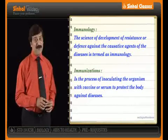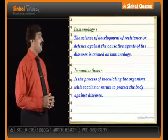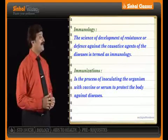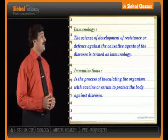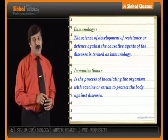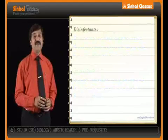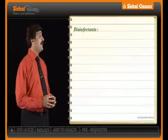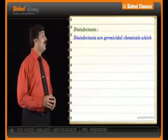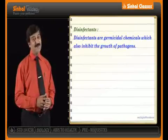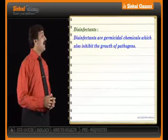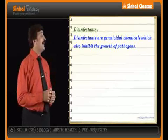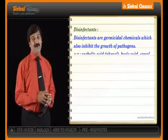Immunization is the process of inoculating the organism with vaccine or serum to protect the body against disease. Disinfectants are germicidal chemicals which inhibit the growth of pathogens. Examples include carbolic acid in the form of phenol, boric acid, or formic acid.